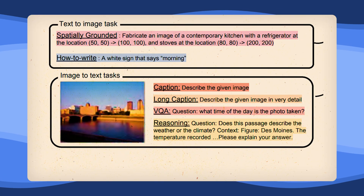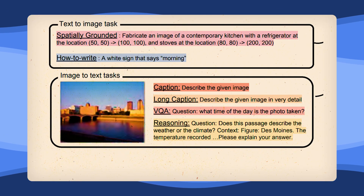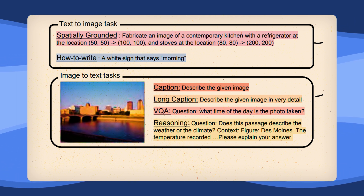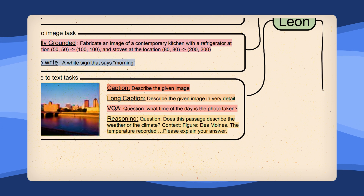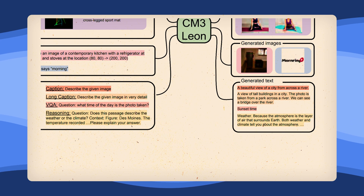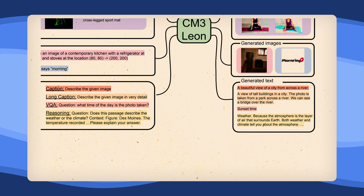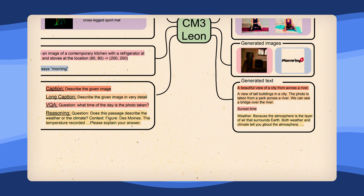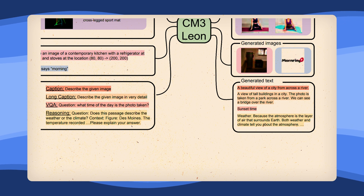Finally, with the correct supervised fine-tuning, Chameleon can also take images as input and do tasks like image captioning with short or long answers, visual question answering, and reasoning. It still is not as good as dedicated image captioning models like Flamingo, but since this is more or less just a side effect of the model design, the results are still very cool.